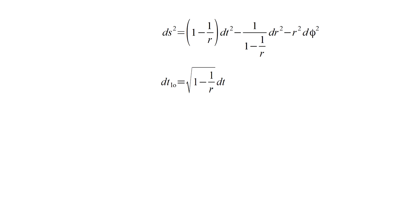The local observer doesn't move, so her ds, which we call dt local, is square root of 1 minus 1 over r times bookkeeper time interval dt.